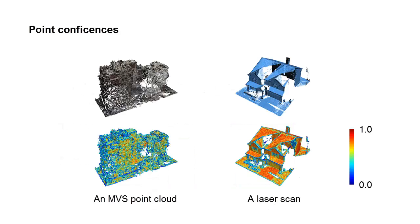Here we show a visualization of the point confidences on two examples. The red color indicates the highest confidence while blue indicates the lowest confidence. We can see the multi-view stereo point cloud is much noisier than the laser scan.